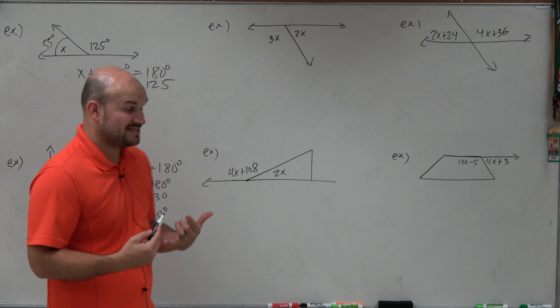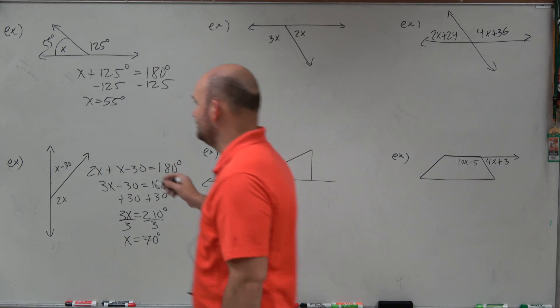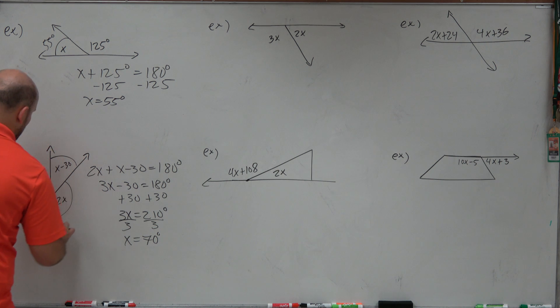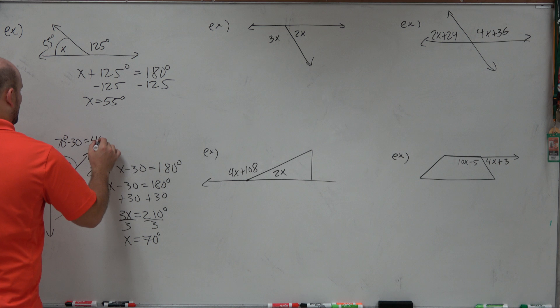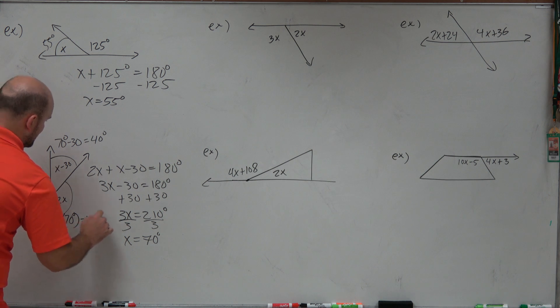Now that I know x equals 70 degrees, you can see that both of these cases, now I need to basically plug that into there. So I'd have 70 degrees minus 30, which is equal to 40 degrees. And then I have 70 degrees times 2, which equal to 140 degrees.